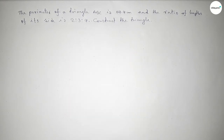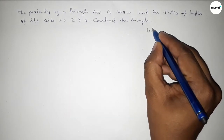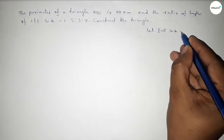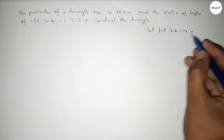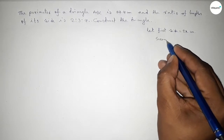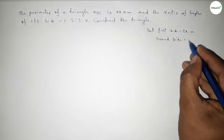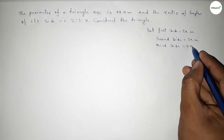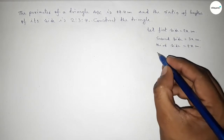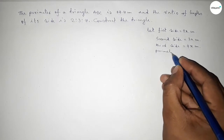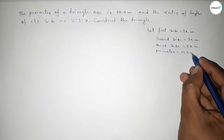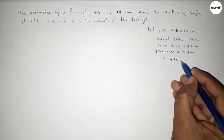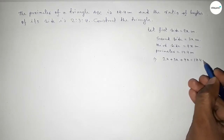The ratio of the three sides is 2:3:4. Let the first side be 2x centimeters, the second side be 3x centimeters, and the third side be 4x centimeters. Given the perimeter of the triangle equals 14.4 centimeters, the perimeter equals the sum of the three sides, so 2x + 3x + 4x = 14.4 centimeters.